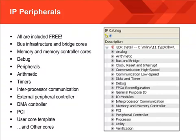As mentioned, there is a lot of IP included with EDK for both Microblaze and the PowerPC 440 processor systems. All of this IP is free, and this includes bus infrastructure and bridge cores, memory and memory controller cores, debug components for ChipScope, peripherals, arithmetic functions, timers, inter-processor communication components, external peripheral controllers, DMA controllers, PCI cores, as well as user core templates and other cores included in this library.